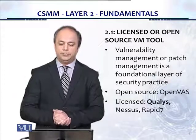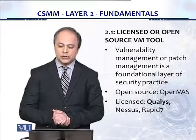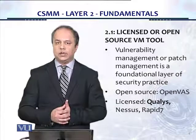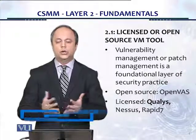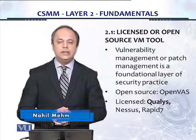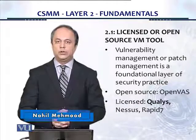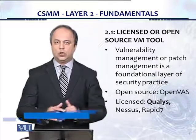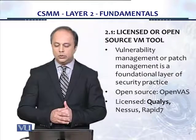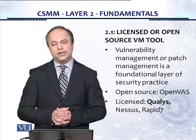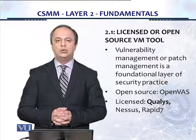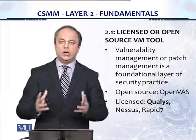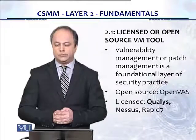Let's take a look at the first control: 2.1 — Licensed or Open Source Vulnerability Management Tool. We've already done the fundamental steps in layer 1, and the first control in layer 2 is that you need a vulnerability management tool in the organization, which can be open-source like OpenVAS — you don't have to spend any money at all, and it works quite fine. Or you can buy a good licensed vulnerability management tool, and an excellent one is Qualys, which runs from the cloud with very little administration work required.